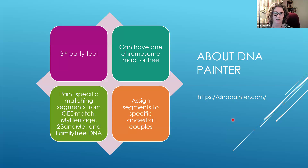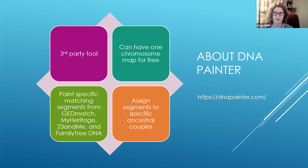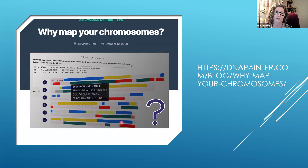You can find DNA Painter at dnapainter.com. It is a third-party tool, and you can have one chromosome map for free; more than that requires a subscription. You can paint specific matching segments from any company that gives you segment data — GEDmatch, MyHeritage, 23andMe, and Family Tree DNA — bringing all your matches from various testing websites into one place. Think of it as a research log that's very visual, where you can assign segments to specific ancestral couples. I'd specifically recommend the 'Why Map Your Chromosomes' blog post by Jonny Perl, the creator of DNA Painter.